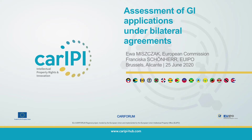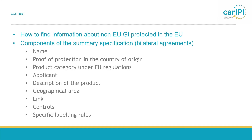So what are we going to look at in this presentation? First, as an introduction, I will briefly explain how you can find information about non-EU GIs protected in the EU — both those registered via direct applications as Monica just explained, and those protected under agreements, which are more interesting for you. The main part of the presentation will cover the different components of the summary specification, which is the application for GI protection submitted in the course of negotiations of a bilateral agreement.